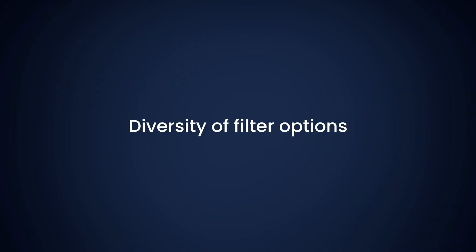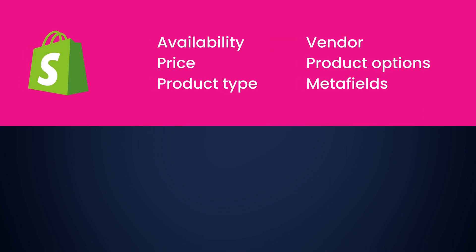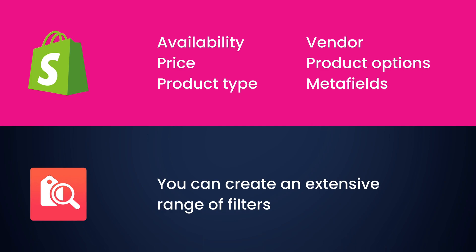Let's make a comparison of the diversity of filter options between the two. With OS 2.0 updates, Shopify allows merchants to create storefront filtering including filter by availability, price, product type, vendor or brand, product options, and metafields. An important thing is that if your customer has their currency set to anything other than your store's primary currency, the price filter of OS 2.0 isn't displayed. Furthermore, native filters are hidden for collections with over 1,000 products.